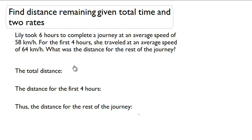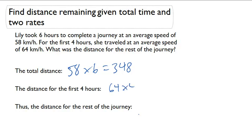First, let's calculate the total distance: 58 kilometers per hour times six equals 348. Now we can calculate the distance for the first four hours: 64 times four equals 256.